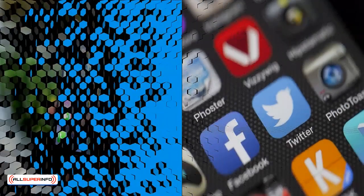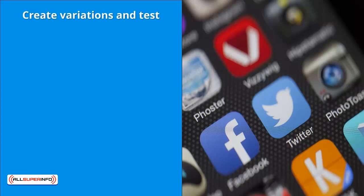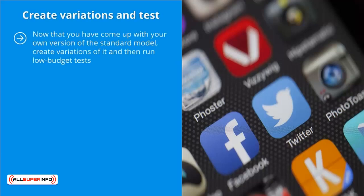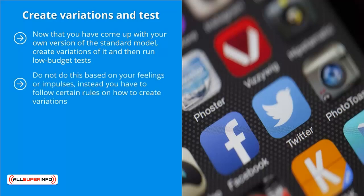Create variations and test. Now that you have come up with your own version of the standard model, create variations of it and then run low-budget tests. Do not do this randomly or based on your feelings or impulses. Instead, you have to follow certain rules on how to create variations — otherwise you wouldn't know which part of the ad accounts for its greater success.